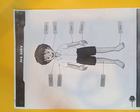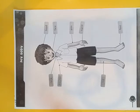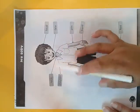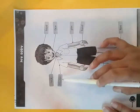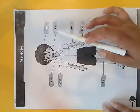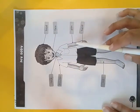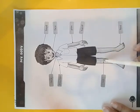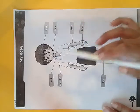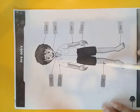Now today we repeat our body parts. Touch your neck — this is your neck. Neck, shoulder — this is your shoulder. Head, this is your head. Face, this is your face. Arm, this is your arm. Hand, this is your hand. Leg, this is your leg. Feet — these are your feet. Neck, shoulder, head, face, arm, hand, leg, feet.